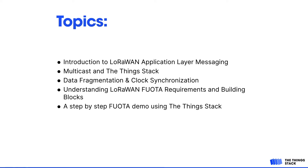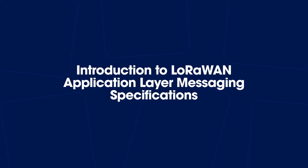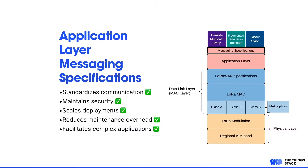The topics that will be covered are the following. Let's start with an introduction to LoRaWAN Application Layer Messaging Specifications. The LoRa modulation and the physical layer are the foundation where we build the LoRa MAC class A, class B, and class C support. Afterwards, we have the LoRaWAN specifications and then comes the application layer. This application layer provides flexibility and can be used for messaging specifications such as remote multicast setup, fragmented data block transport, or clock synchronization.